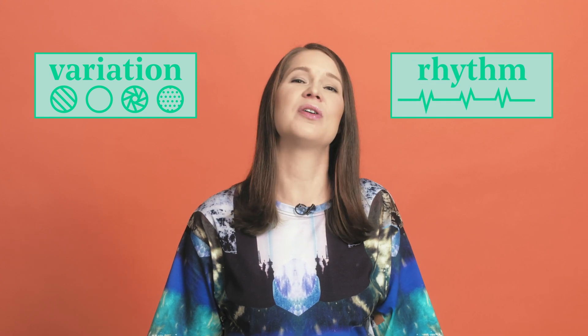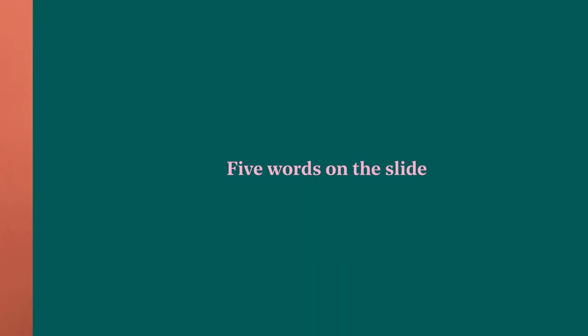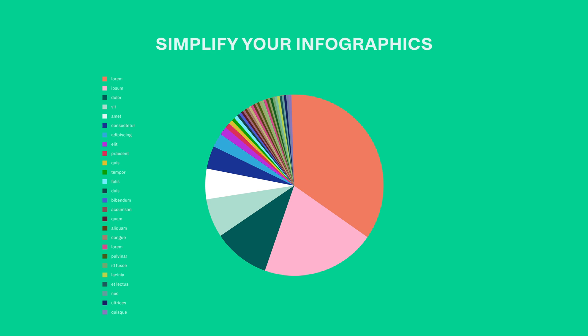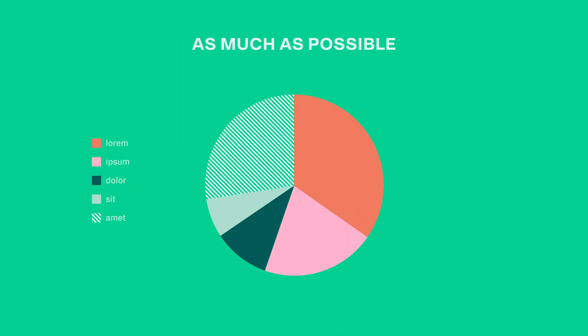To create variation and rhythm, change the amount of text on your slides. You can try just five words or quotes. If you have a big number, make it stand out. You can also use photos or infographics, but only use one per slide. Simplify your infographics as much as possible and only use the most important facts. Give your infographic a really good, informative title that clearly states what's important about it. Don't hope that your audience gets it on their own.